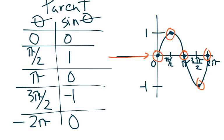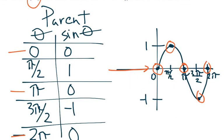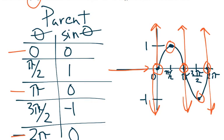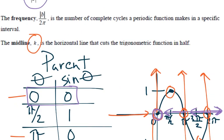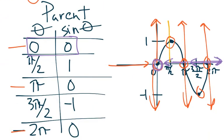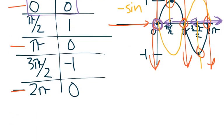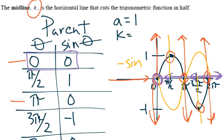For sine, the points at 0, π, and 2π are always on the midline. If we shift that midline with K, all three shift up or down. If the period changes, the points compress or stretch. The amplitude affects how high and how low we go. On the parent sine graph: amplitude = 1, K = 0, period = 2π.